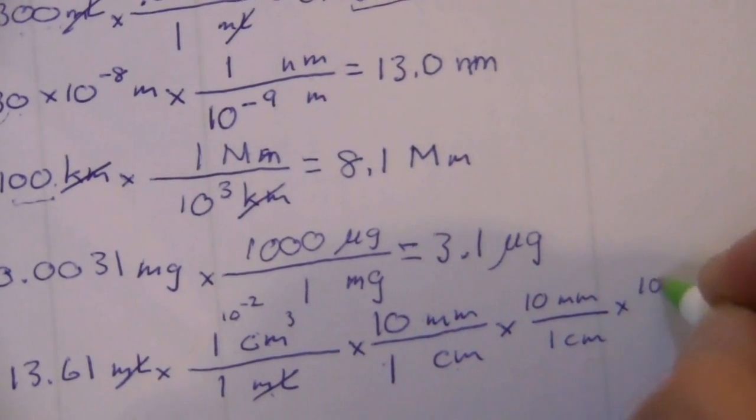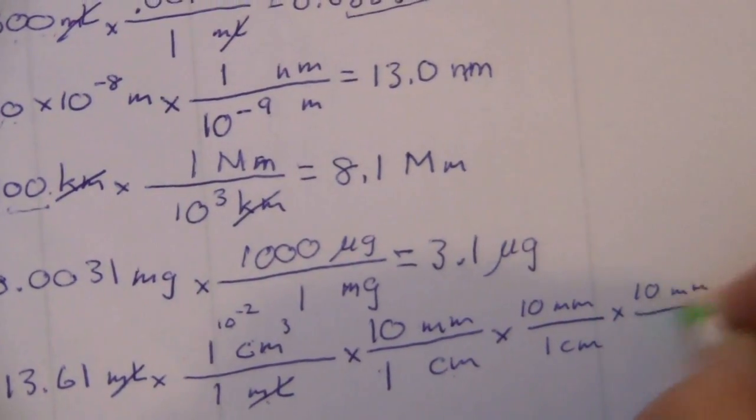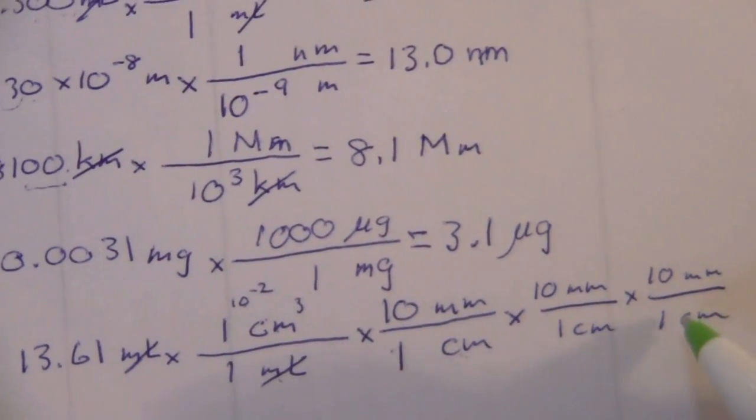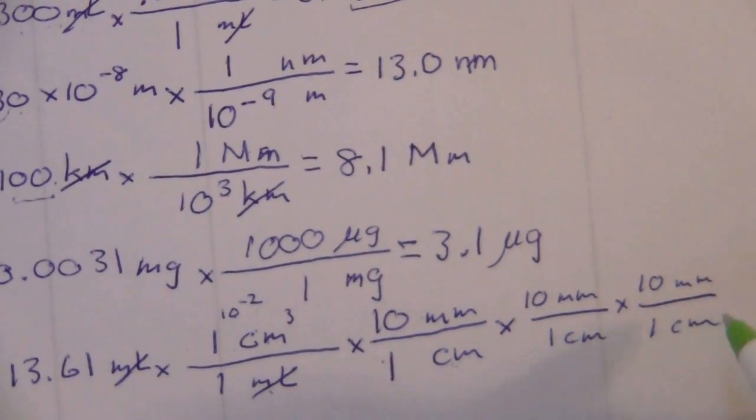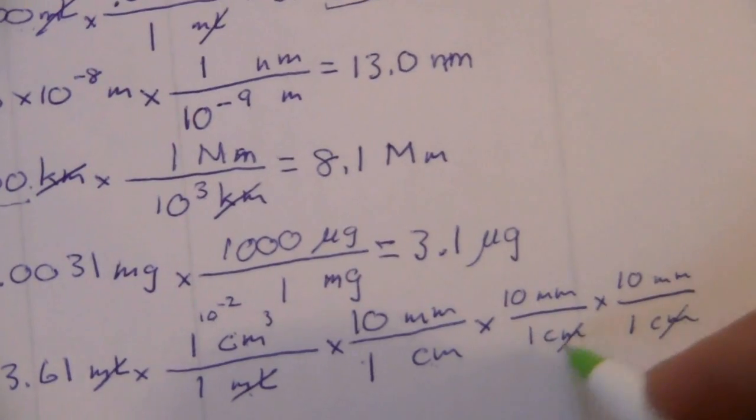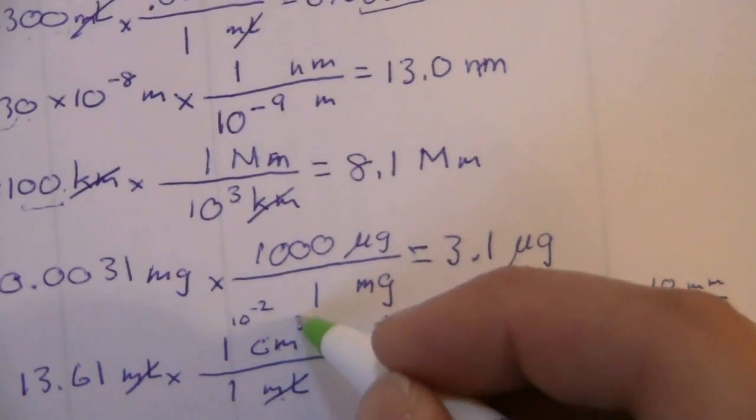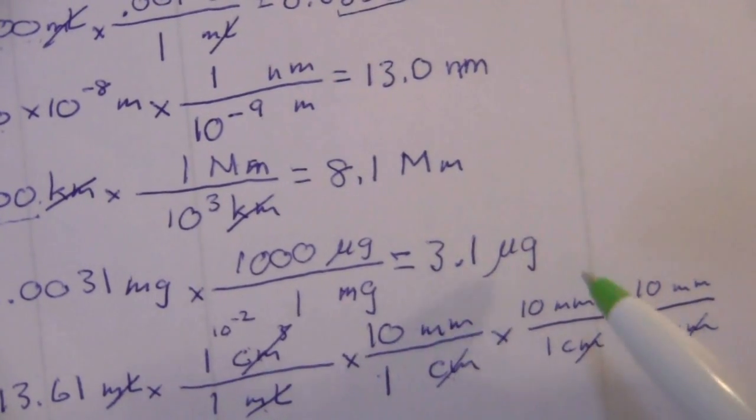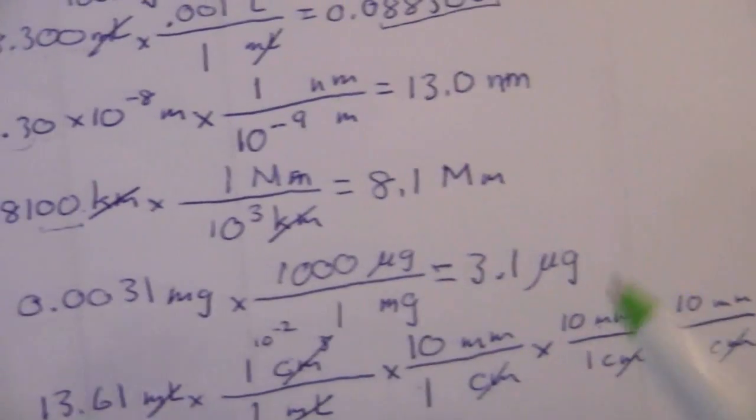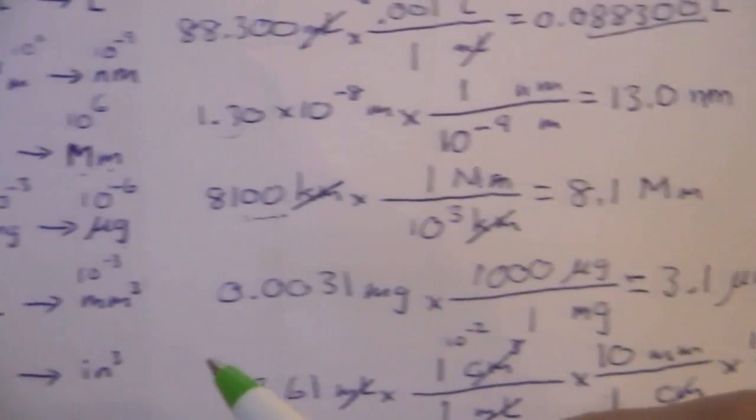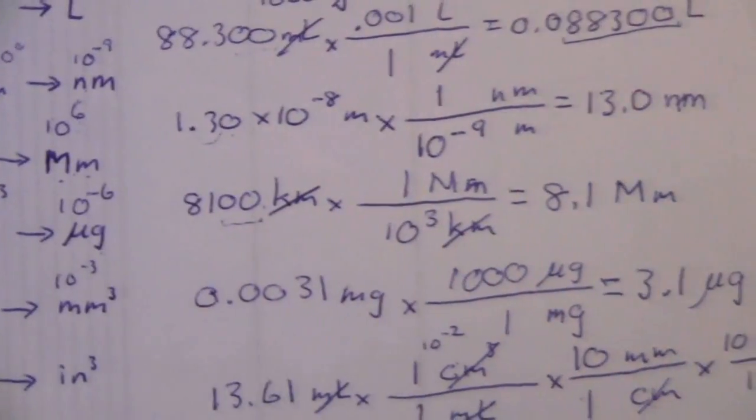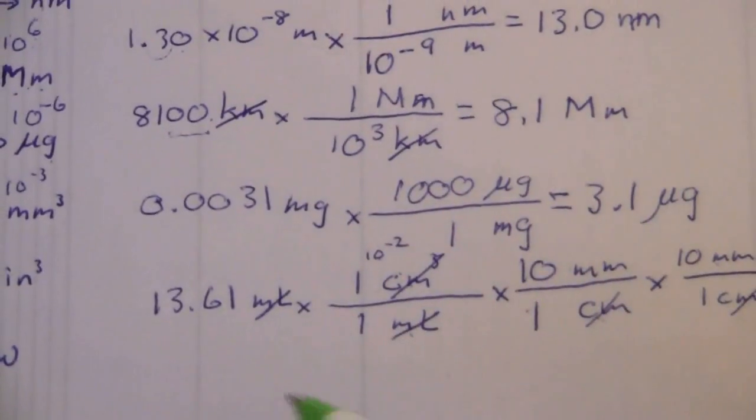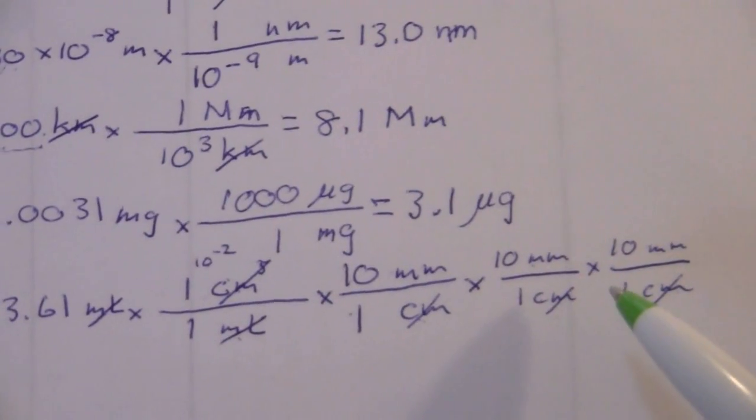I'll just go ahead and write this out a couple more times so that you can see it very clearly: 10 millimeters to one centimeter. Now we have centimeters times centimeters times centimeters, and what does that equal? Centimeters cubed. So all together those three cancel with that one, and then what are we left with? Millimeters times millimeters times millimeters equals cubic millimeters, and that's what we're looking for.